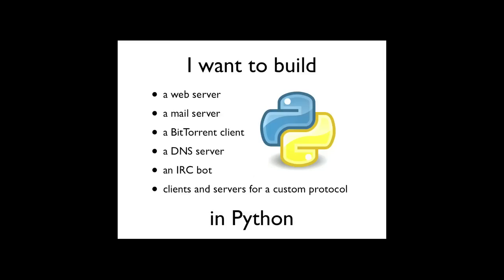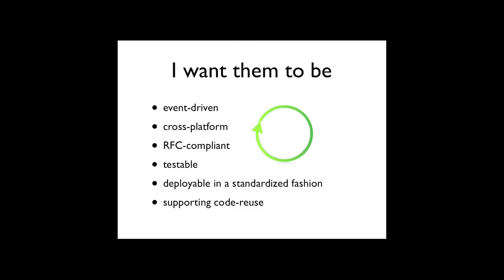Let's say that I am an ambitious person. I have a lot of things that I want to build. I'm not just building a website. I might need to build a mail server, an IRC chat bot, a DNS resolver. Maybe I'm writing custom protocols — I need event-driven clients and servers for custom protocols. And I want to build all of these things in Python, and I'd like them to be cross-platform, using the best underlying operating system asynchronous I/O primitives to be efficient. Hopefully I'm going to write RFC-compliant code without drowning myself in 10 different RFCs.